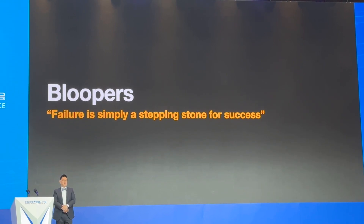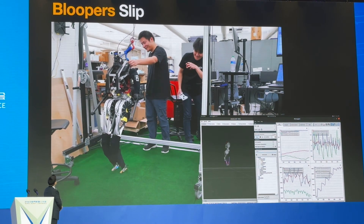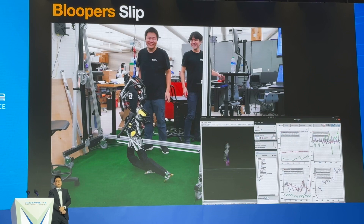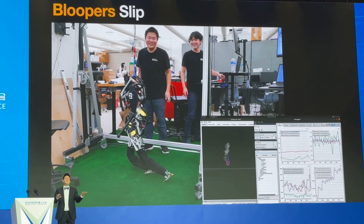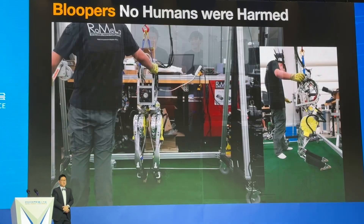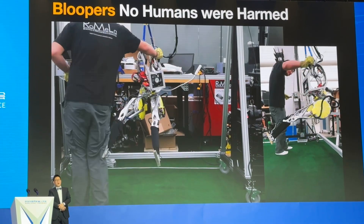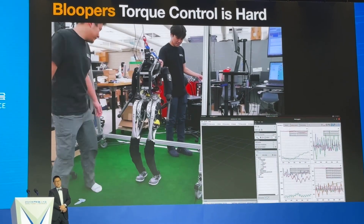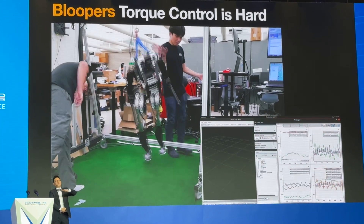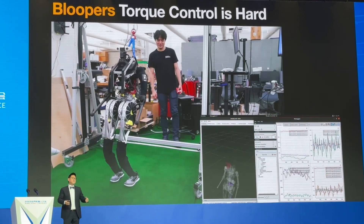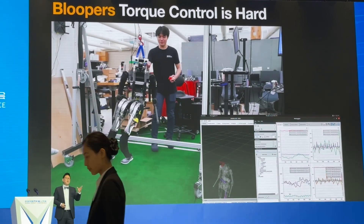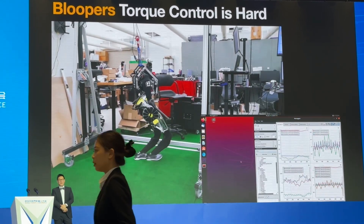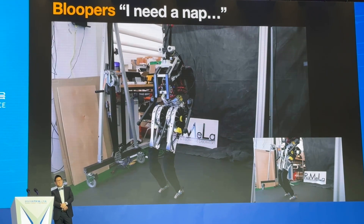When you do robotics presentations, you always want to show bloopers. Before we put shoes on the robot, we just had silicone slippers and it was slipping. Now we use regular Nike shoes. The first accident — nobody got hurt. Torque control is very difficult: after that first accident, we added multiple layers of safety features. It constantly monitors vibration, acceleration, and torque — if something goes wrong, it instantly cuts the power. Of course, everybody in robotics has had these kinds of moments.